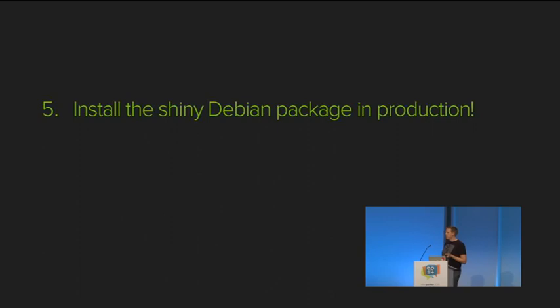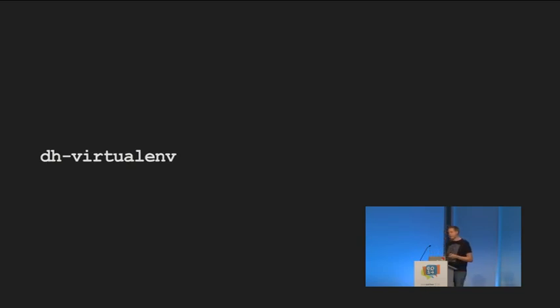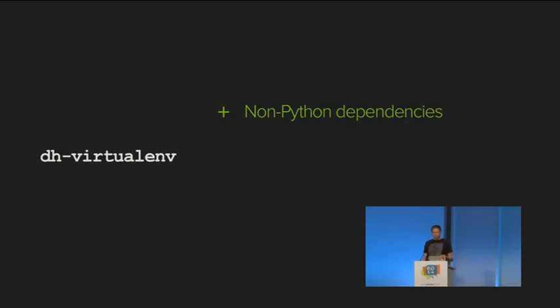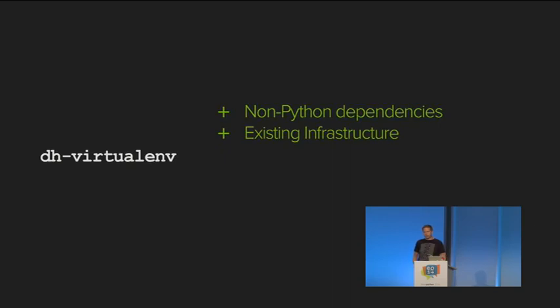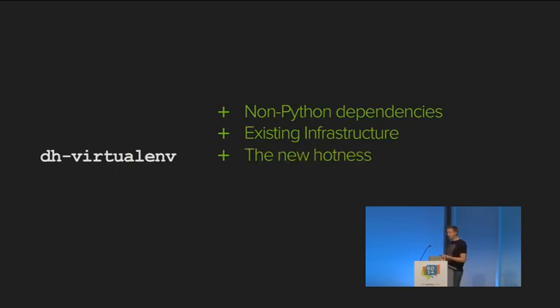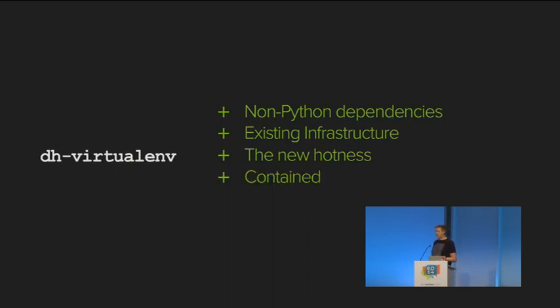DH VirtualEnv gives you the ability to define non-Python dependencies just like normal Debian packages, leverages existing Debian build infrastructure and CI systems, gives you access to the newest packages from PyPI rather than being limited to what's in Debian, and produces a nicely contained virtual environment on your production host.